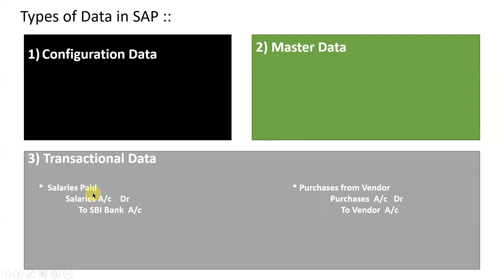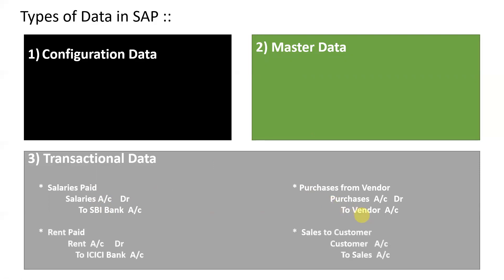Examples of transactional data: salaries paid — the accounting entry is Salaries Account debit, SBI Bank credit. Purchase from vendor — Purchase Account debit, Vendor/Supplier Account credit. Rent paid — Rent Account debit, ISSA Bank credit. Sales to customer — Customer Account debit, Sales Account credit. These are the transactions posted in the Tally application. That information we call transactional data. The day-to-day business transactions and general entries posted on a daily basis are called transactional data in the SAP point of view.